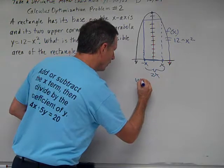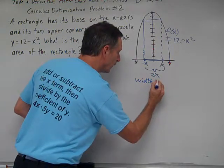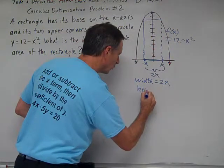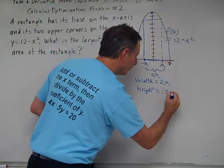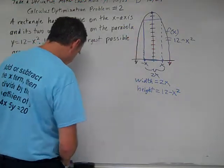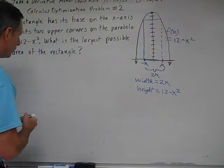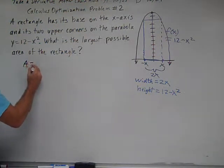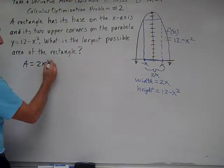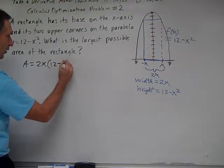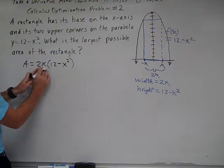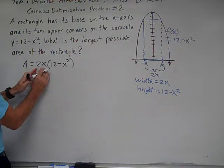So we have width equals 2x, and the height, or sometimes we could say length, would be 12 minus x squared. So to find the area of this rectangle, we would get area equals length, or width times height, and so we'll have 2x for the width times quantity 12 minus x squared. I placed the 12 minus x squared in parentheses, because we have to multiply the entirety of the height by the width.